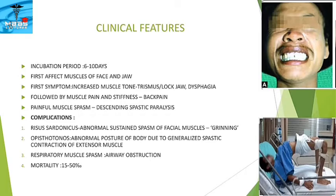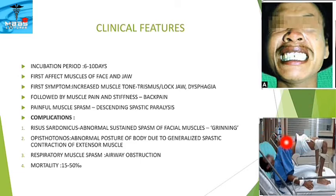Complications include Risus sardonicus, which is an abnormal sustained spasm of the facial muscles causing a grinning appearance. Another complication is opisthotonus, which is an abnormal posture of the body due to generalized spastic contraction of extensor muscles. Respiratory muscle spasm can also lead to airway obstruction.